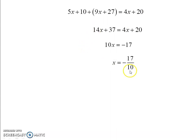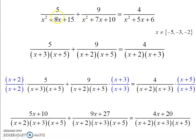And as long as this is not one of our restricted values, remember our restricted values were negative 5, negative 3, and negative 2, then this is the value of x that would make both sides of this original equation equal. If you want to plug them in and try, you can. But that is how this topic works. Thank you.